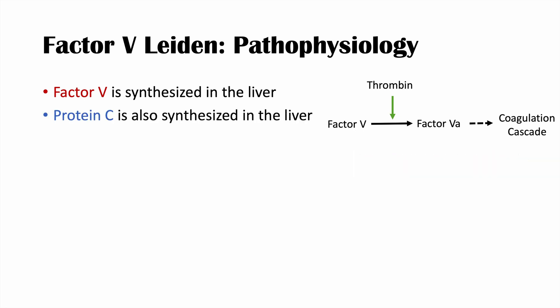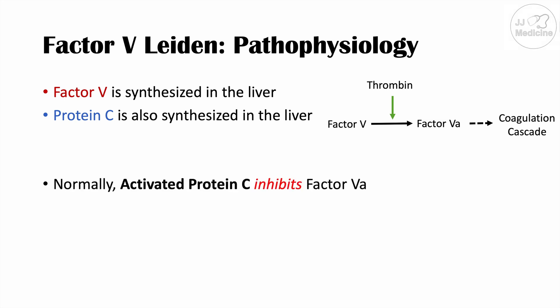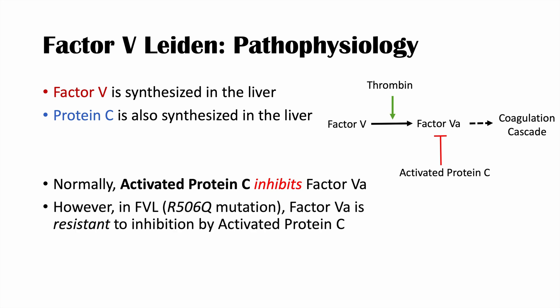There is another important protein also synthesized in the liver: protein C. Normally in the coagulation cascade, activated protein C inhibits activated Factor V to regulate the cascade, because we don't want it to go out of control and lead to formation of too many fibrin clots. However, in Factor V Leiden, the R506Q mutation causes activated Factor V to be resistant to inhibition by activated protein C — we call this activated protein C resistance. Because this inhibition is blocked, there is an increased coagulation cascade and increased formation of fibrin clots or thromboses.